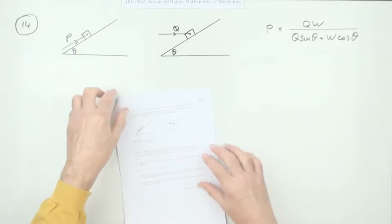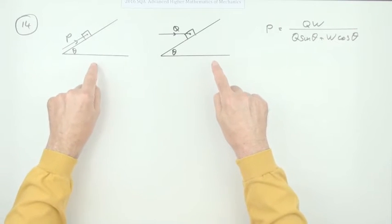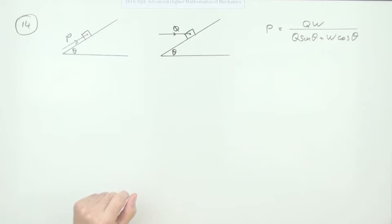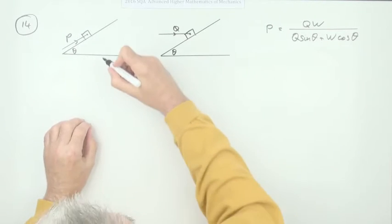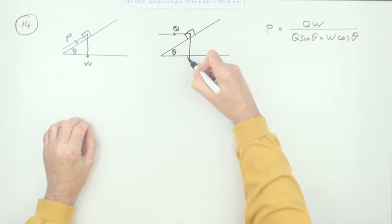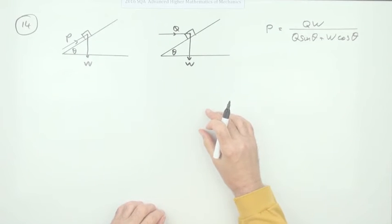First thing about this is in these two different situations there's only two things which are the same: apart from the angle, the weight is the same in them both, so that can be used as a comparison. The only other thing that's the same in them both is that the coefficient of friction is the same in both situations.